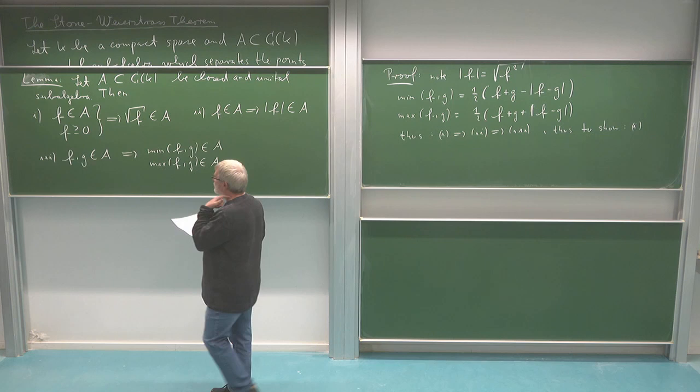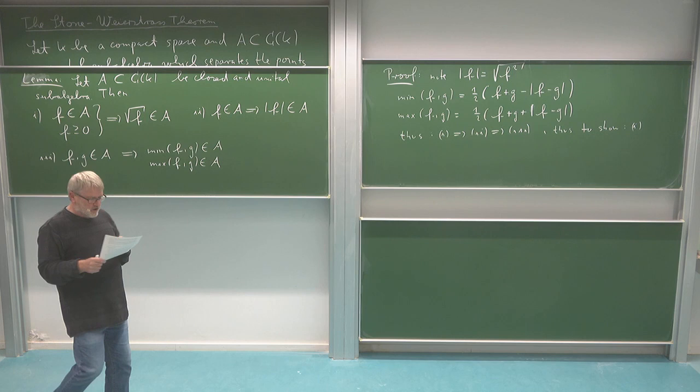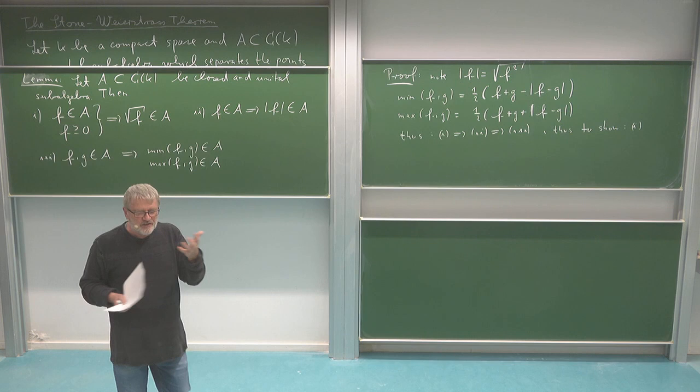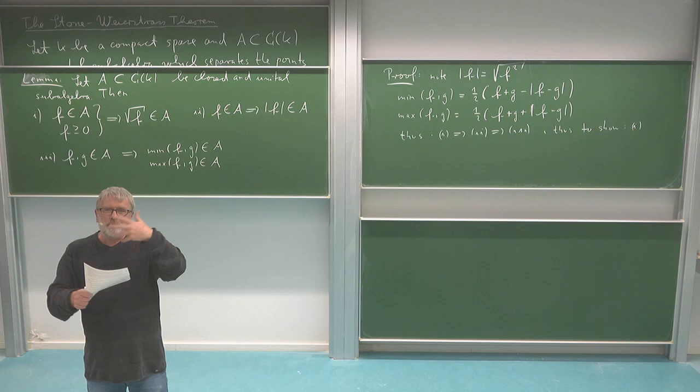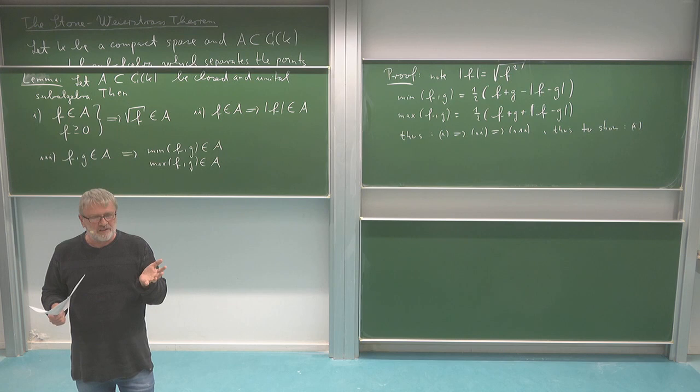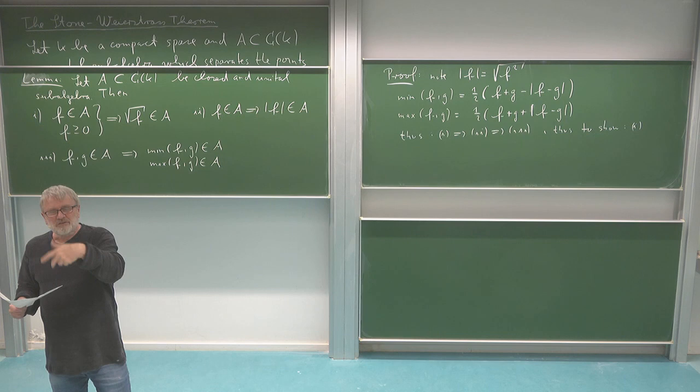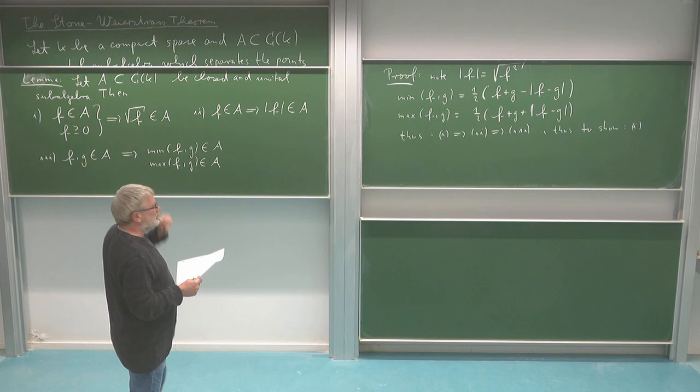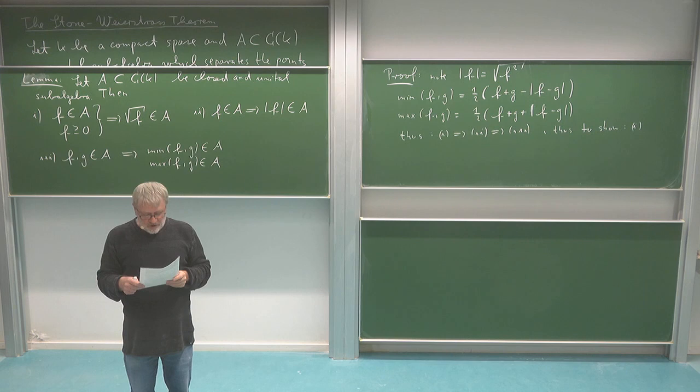So I should consider an F which is positive and I want to see that the square root is also in A. How do I do this? I use analysis essentially by writing the square root as a Taylor series, and then going back to operations using sums and products. I know I'm not falling out of my algebra, but I also need a limit. So I have to control the limit — but my set A is closed, so I know limits are also there.